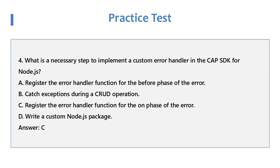Question 4: What is a necessary step to implement a Custom Error Handler in the CAP SDK for Node.js? A. Register the Error Handler function for the Before Phase of the Error. B. Catch Exceptions during a CRUD operation. C. Register the Error Handler function for the On Phase of the Error. D. Write a Custom Node.js Package. Answer: C.